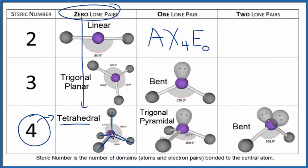So that's the molecular geometry for XeO4, xenon tetroxide. We also talked about the bond angles and the electron geometry. This is Dr. B — thanks for watching.